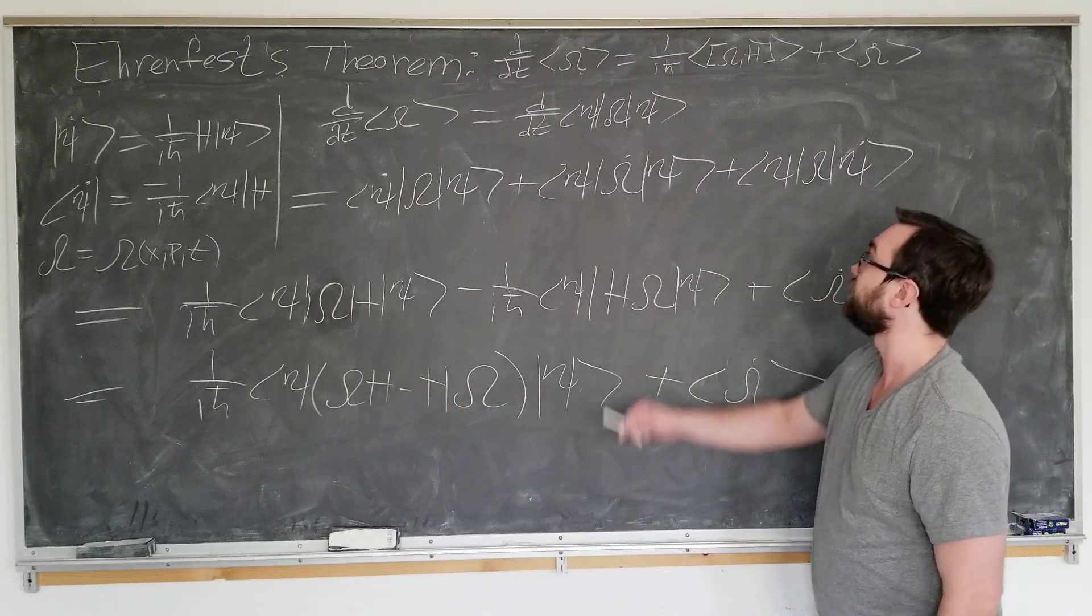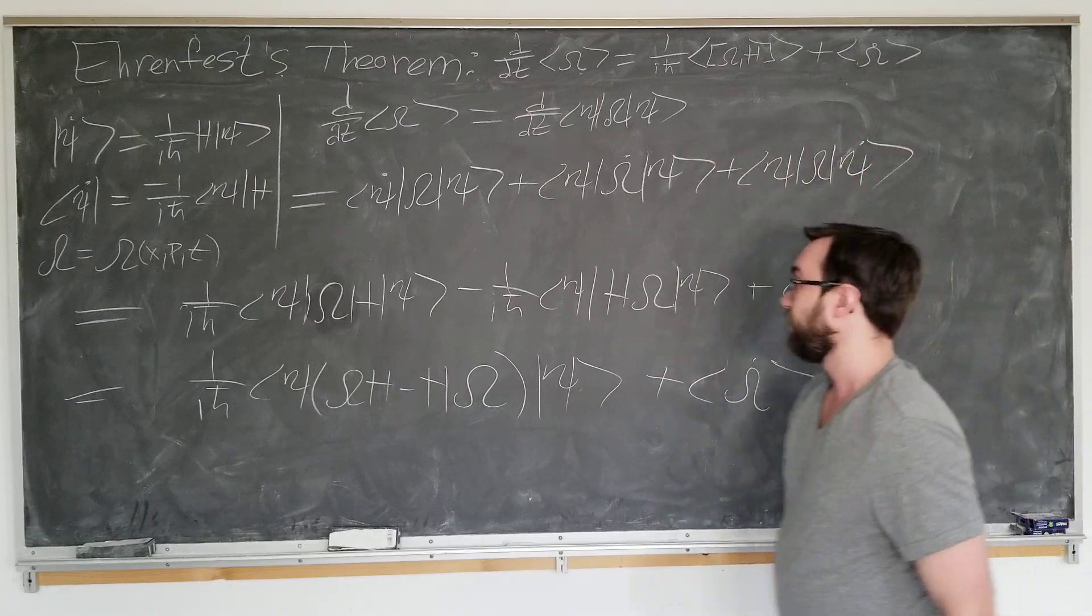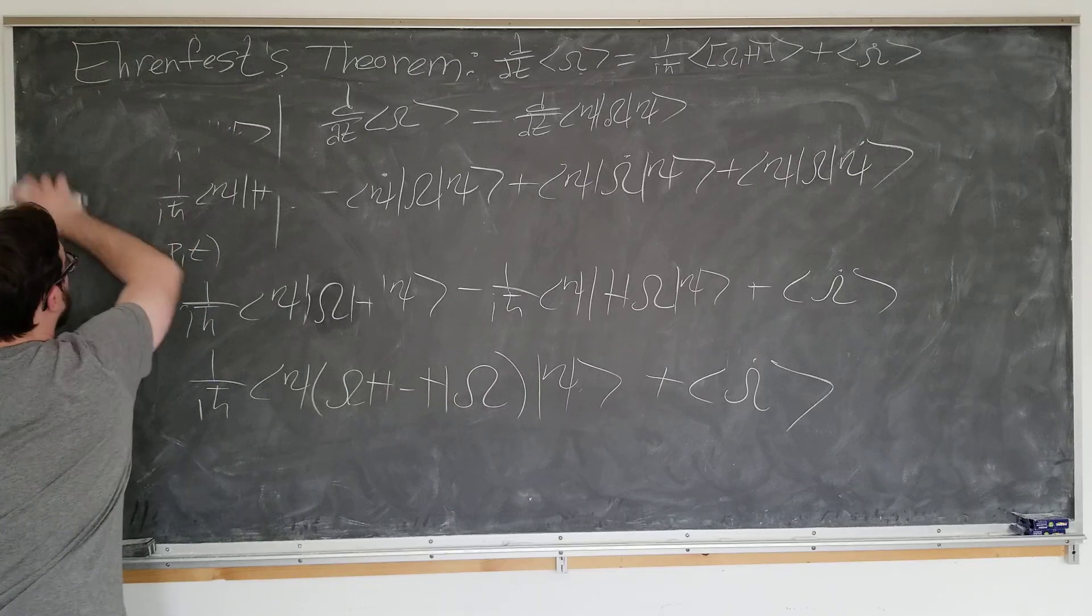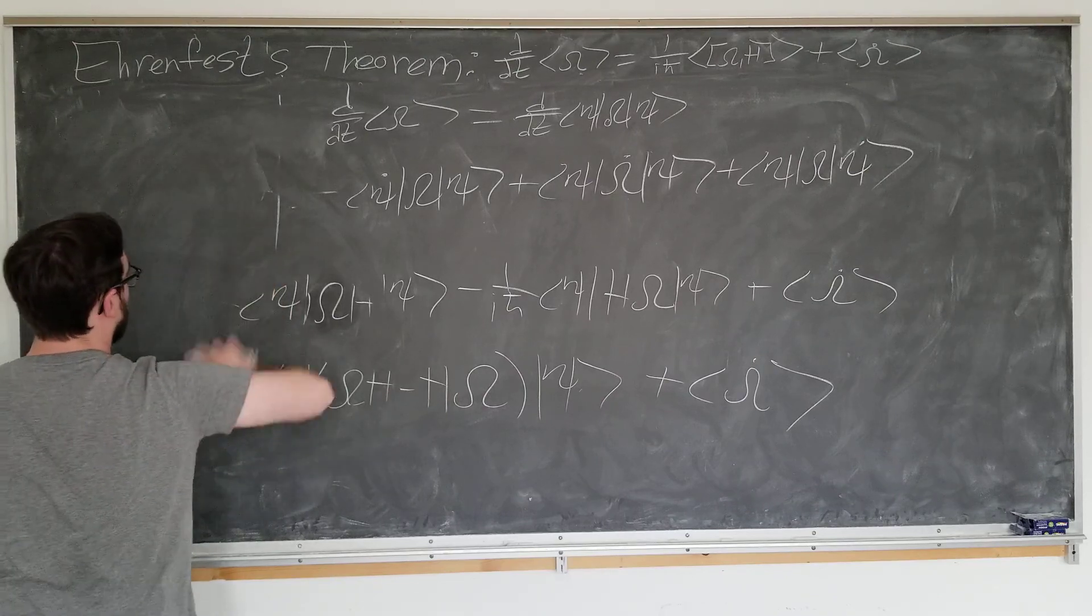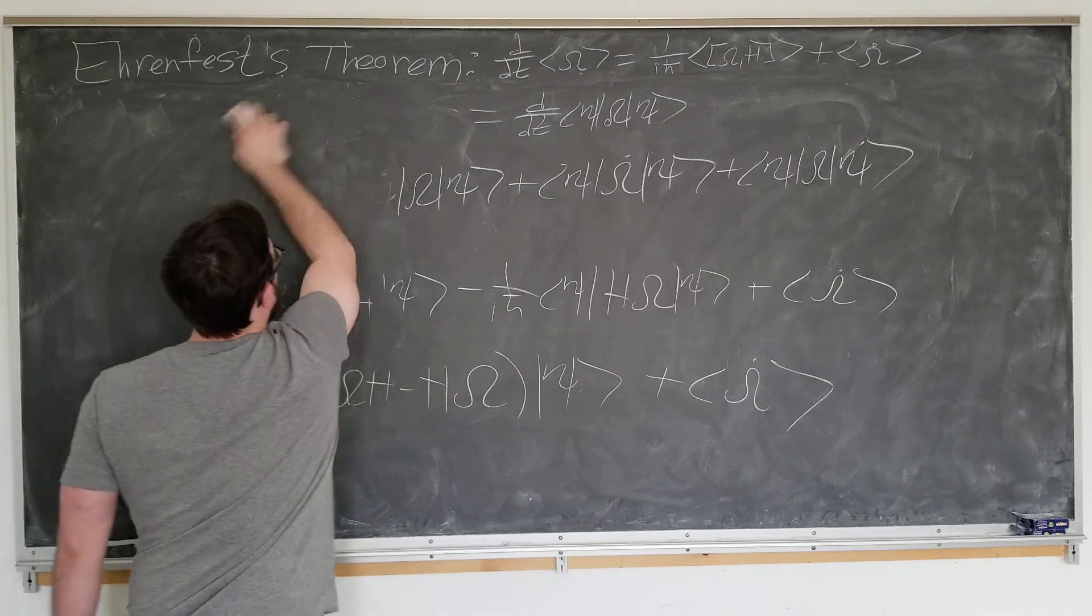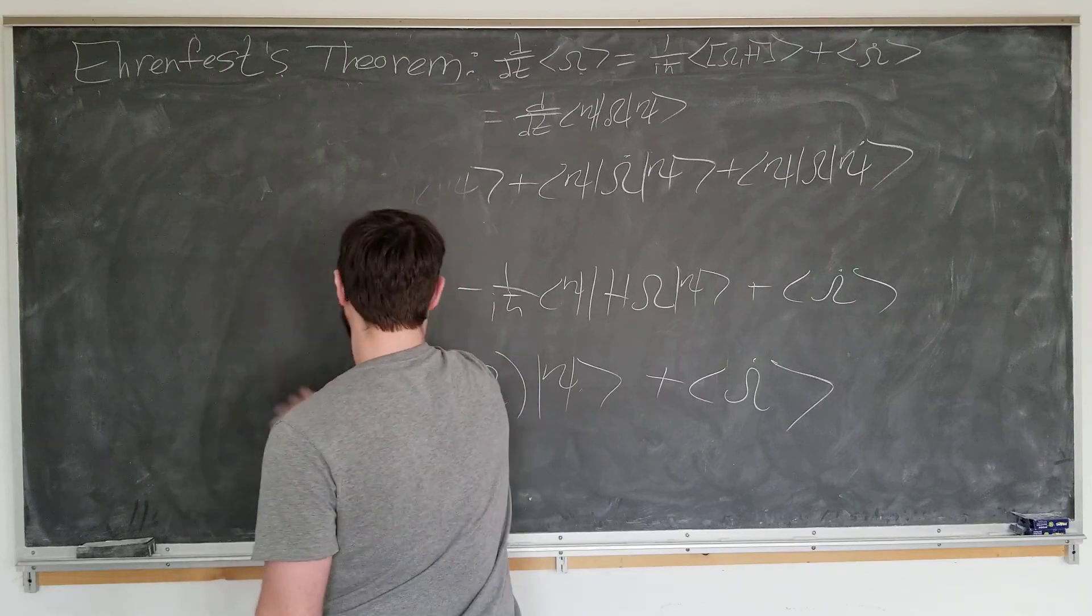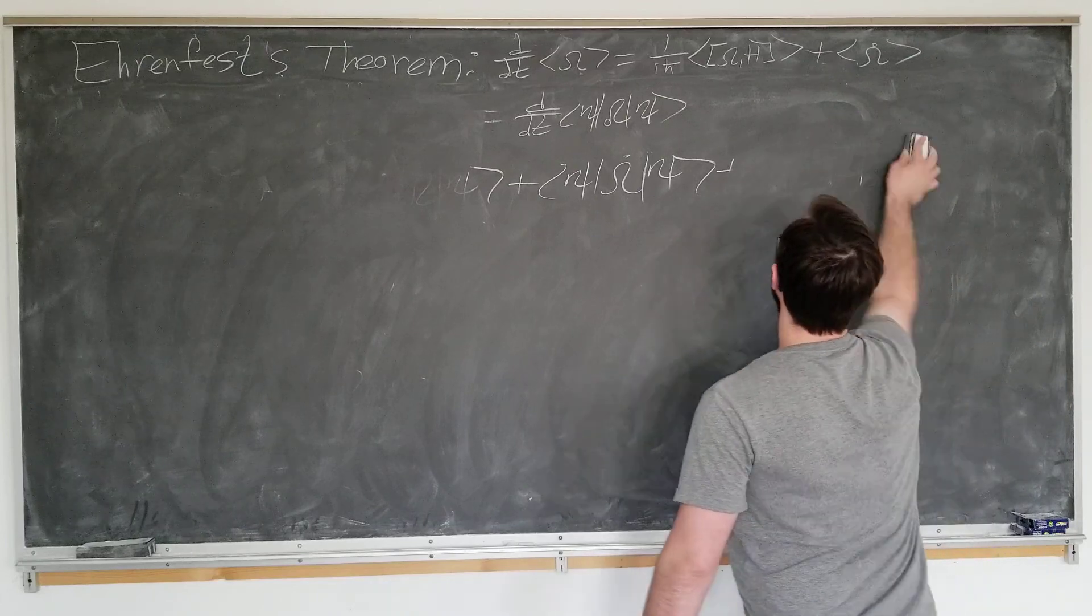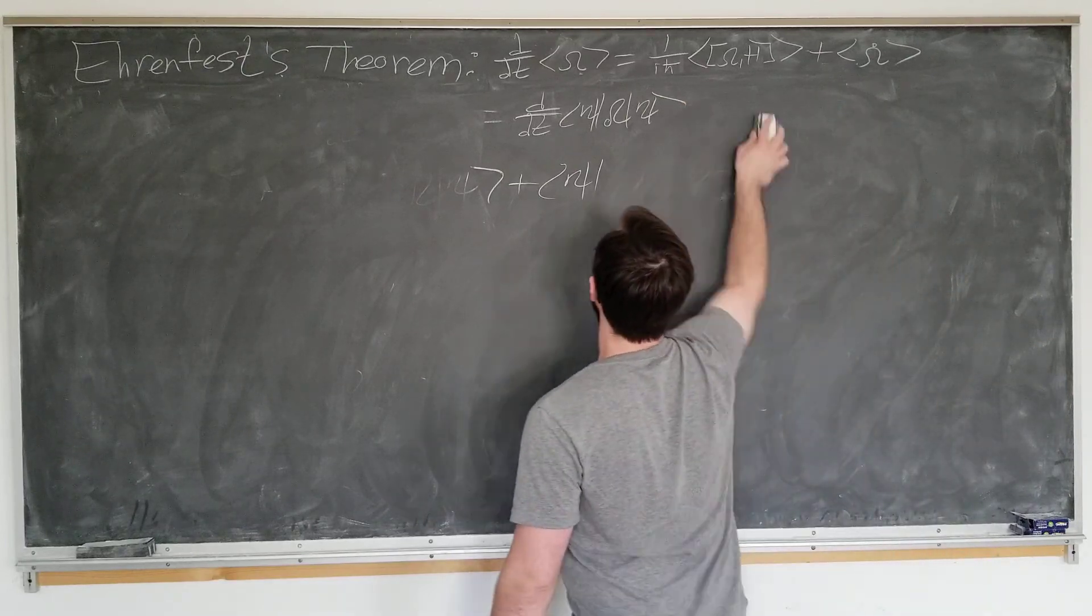After we drop the psi, replace this with the commutator, this is exactly what we want to show here on the right hand side. Now we have derived what is known as Ehrenfest theorem, and it seems pretty abstract at this point.